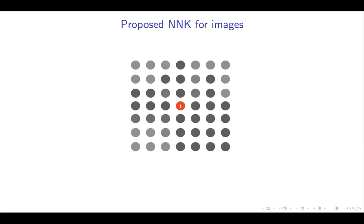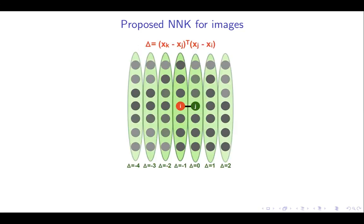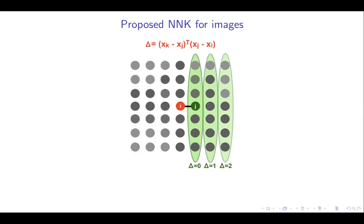To better understand the proposed method, let's walk through a simple example to clearly understand each step involved in the proposed NNK image graph. Consider a 7x7 window centered at pixel i. Previously, one would connect all the pixels in this window to node i to form a graph. Now, for NNK, start with one of the closest pixels, namely j, and assume it's connected. Given this setup, the pre-computed threshold condition associated with each neighbor is as shown in the figure. It is highly unlikely that node j will affect the connectivity of pixels in the negative delta region. And hence, without loss of generality, we can focus on pixels with non-negative threshold.